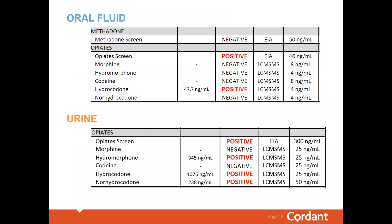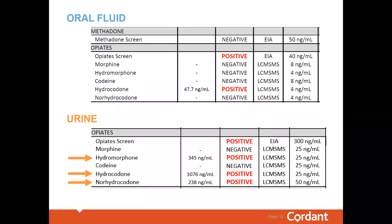Here's a side-by-side of what you might see if you took both a urine sample and an oral fluid sample at exactly the same time. These samples are consistent with hydrocodone use. The urine at the bottom shows the parent drug hydrocodone and the metabolites hydromorphone and norhydrocodone. At the top, you see the oral fluid result with just the parent drug hydrocodone and no metabolites. These are both completely normal results.